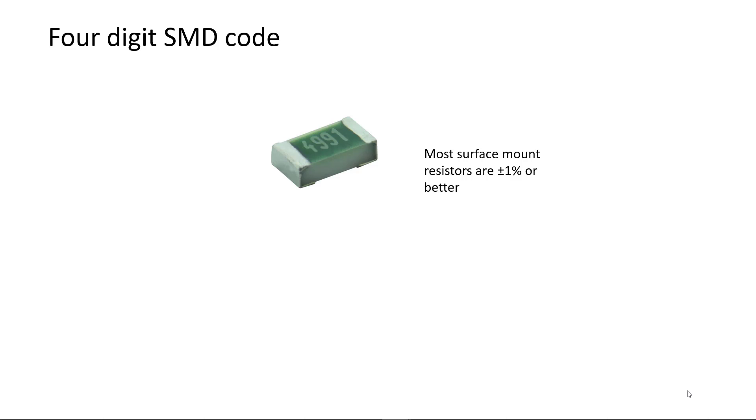Again, if the surface mount resistor is large enough, usually 0805 or larger, manufacturers may identify a resistor's value using four digits. The first three digits identify the first three digits in the resistor's value, and the fourth digit is the power of 10 multiplier which identifies the number of zeros that follow. So this 4991 resistor is a 4990 ohm resistor or 4.99 kiloohm resistor.